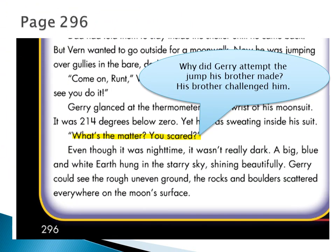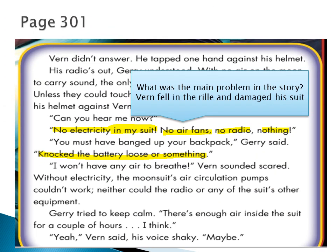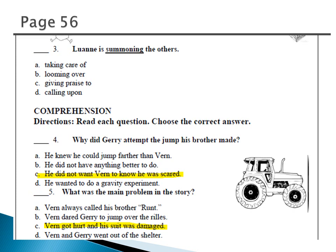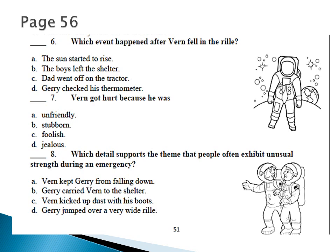Here on page 301 we find the comprehension questions. For example: why did Jerry attempt the jump his brother made? Which event happened after Verne fell in the rille? The sun started to rise, or the boys left the shelter? The boys left the shelter was the first thing that happened in the story, and dad going off on the tractor happened before the story even starts.